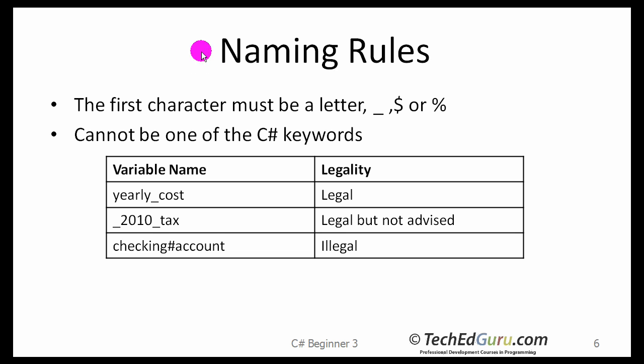Variable or constant naming rules. The variable name must begin with a letter, underscore, dollar sign, or a percent sign. Cannot contain any periods or mathematical operators. We will look at the list of keywords in one of the later slides.